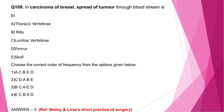Question number 109: In carcinoma of breast, spread of tumor through the bloodstream is to thoracic vertebrae, ribs, lumbar vertebrae, femur, and skull. The correct order of decreasing frequency is: lumbar vertebrae, femur, thoracic vertebrae, ribs, skull — that is C, D, A, B, E. The correct answer is option 2, and the most dependent position for this spread is the Batson's venous plexus.